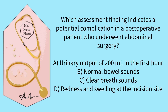Which assessment finding indicates a potential complication in a post-operative patient who underwent abdominal surgery? Options: urine output of 200 ml in the first hour, normal bowel sounds, clear breath sounds, or redness and swelling at the incision site.